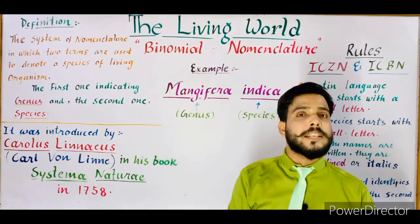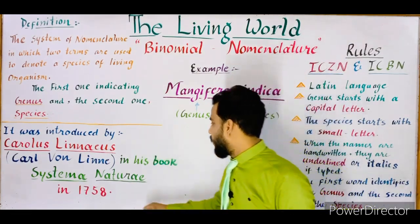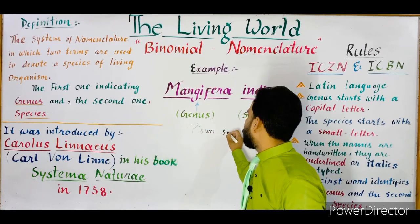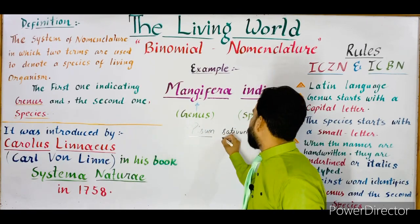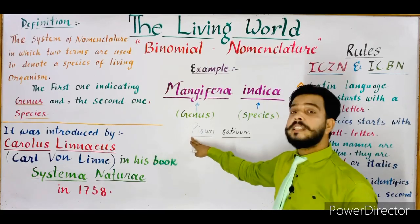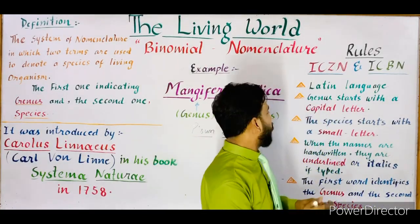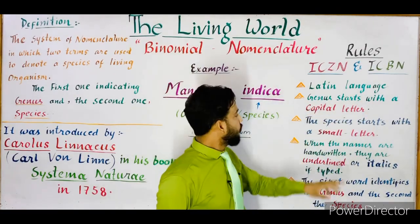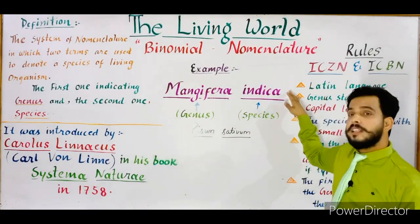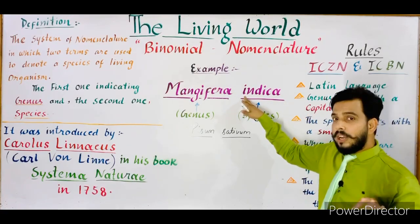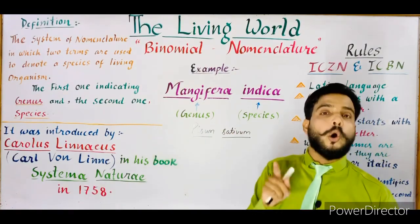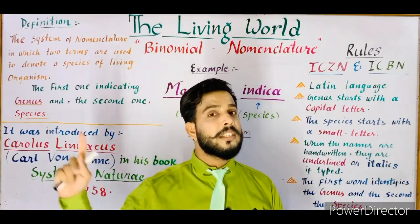For example, in Pisum sativum — the scientific name of pea — Pisum is the genus and sativum is the species. The first letter of the genus Pisum is always capital P. Now the species always starts with a small letter. As you can see, indica is the species of mango and it starts with a small letter. Similarly, sativum starts with small s. So the species is always written in small letters while the genus starts with a capital letter.